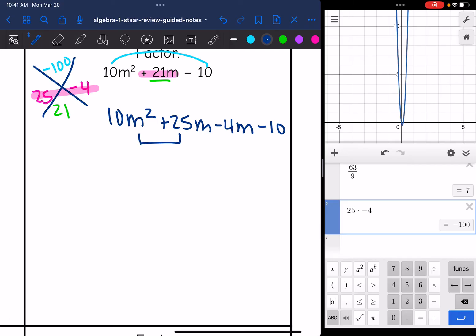So I can factor this by grouping. The GCF of 10m squared plus 25m would be 5m, and 10m squared divided by 5m is 2m, and 25m divided by 5m is 5. And then the GCF of this second group, I'm going to make sure it's negative so that my common binomials will match. Negative 4 and negative 10 have a common factor of 2, so negative 2 is that GCF. Negative 4m divided by negative 2 is 2m, and negative 10 divided by negative 2 is 5. So now I'm going to factor out this common binomial. I'll put that in one group, and my GCFs of 5m minus 2 in another group.